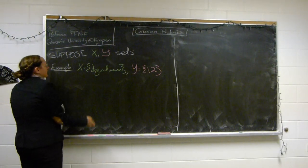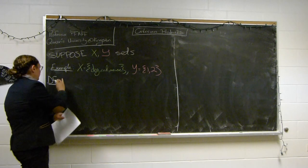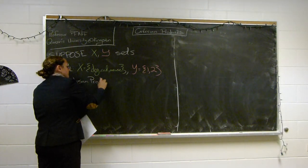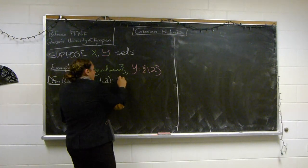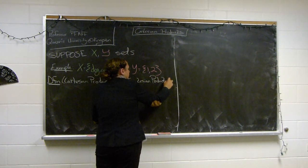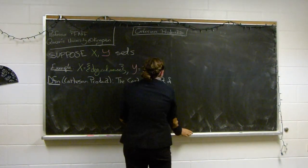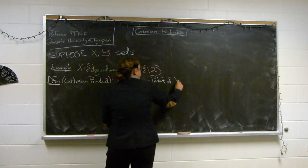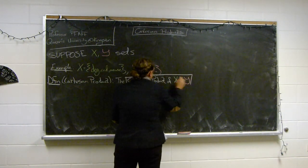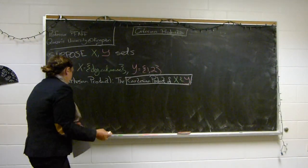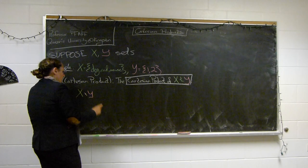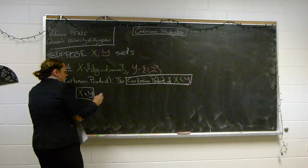So we start with that, and then we define a Cartesian product of those two sets. The order you're going to see is going to matter. So the Cartesian product of X and Y is denoted like this: I write X, then a little times symbol, and Y. This is the notation for the Cartesian product of X and Y.